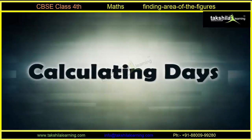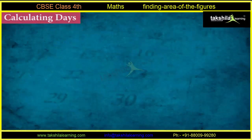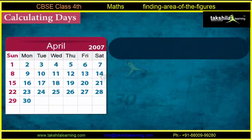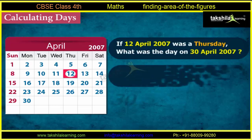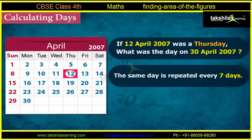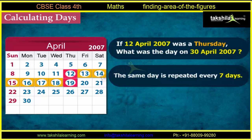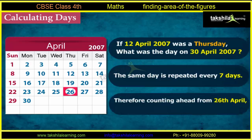Let us try to solve some questions. If 12th April 2007 was a Thursday, what was the day on 30th April 2007? We know that the same day is repeated every seven days. So if 12th April was Thursday, the next Thursday fell on 19th April and then on 26th April. Therefore, counting ahead from 26th April, 30th April 2007 was a Monday.